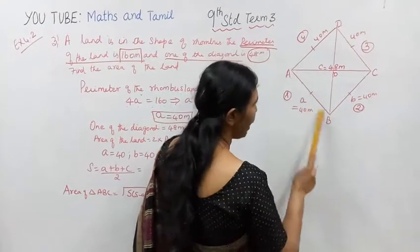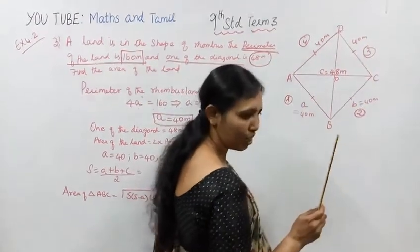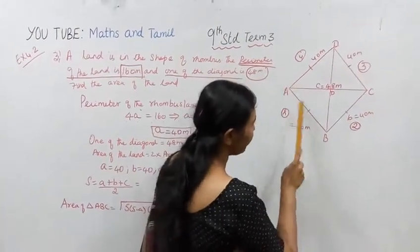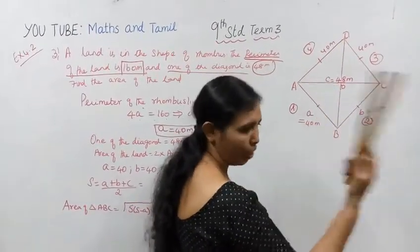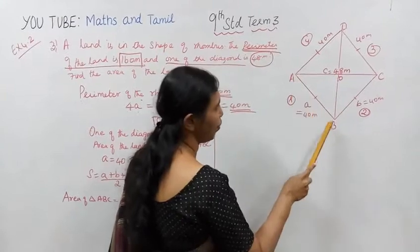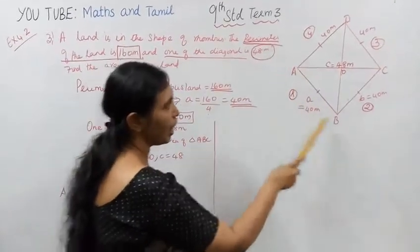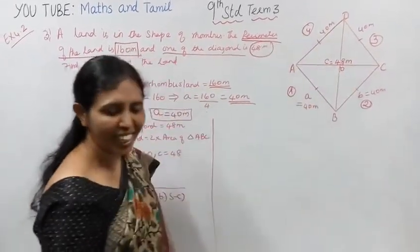To find the area of the land, area of rhombus ABCD equals area of triangle ABC plus area of triangle ADC. That is 2 into the area of triangle ABC. The area of the rhombus equals 2 into the area of triangle ABC.